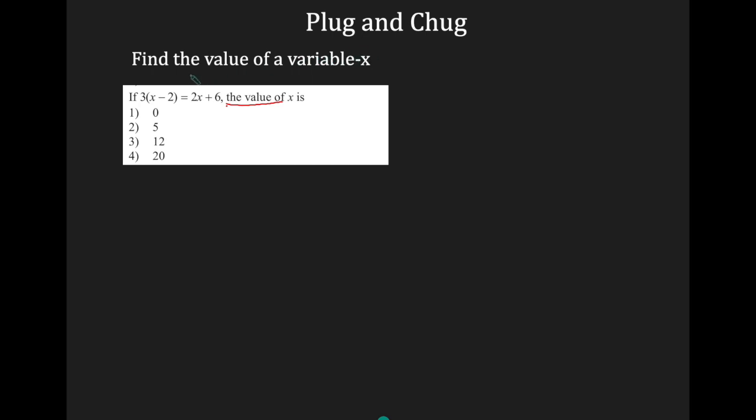So here, whenever they ask you to find the value of a variable, you can use plug and chug. So in my problem, it states if 3 times x minus 2 equals 2x plus 6, the value of x is. So because they ask you to find the value, you can use plug and chug. Again, this is an equation. You can use plug and chug. Is it multiple choice? Yes, plug and chug. So we're going to write our equation, which is 3 times, in parentheses, x minus 2 equals 2x plus 6.